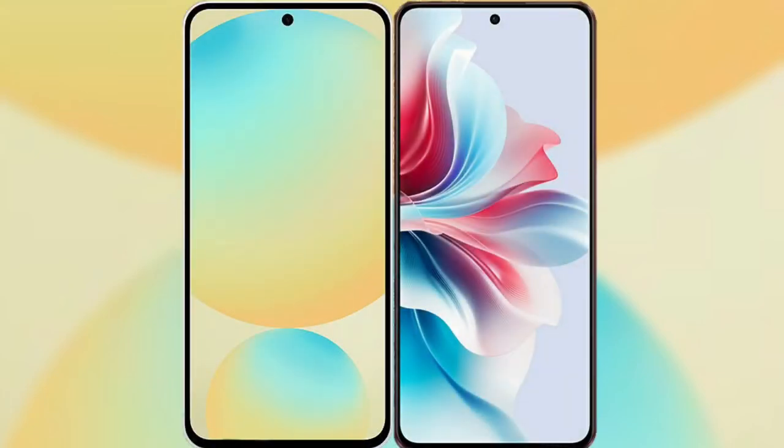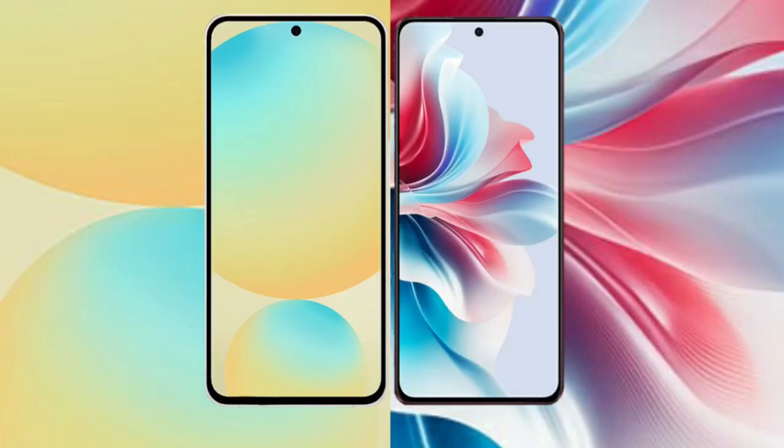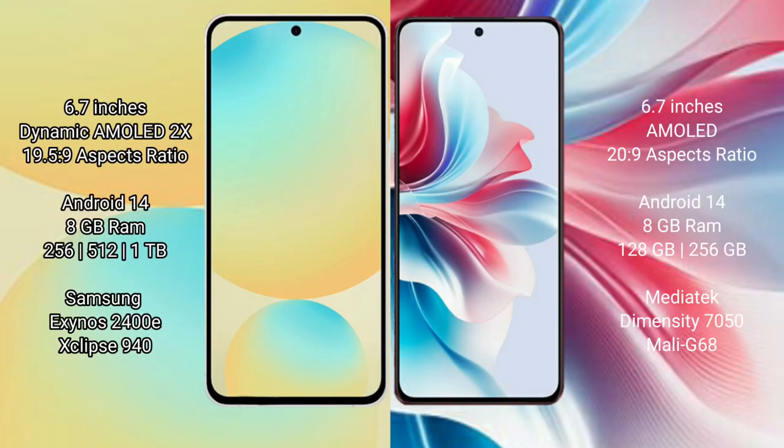I will compare the new Samsung Galaxy S24 FE with Oppo F25 Pro. Samsung Galaxy S24 FE has a 6.7-inch dynamic AMOLED display with aspect ratio 19.5:9. Oppo F25 Pro has a 6.7-inch AMOLED display with aspect ratio 20:9.